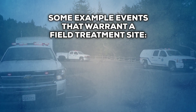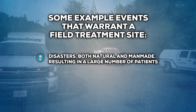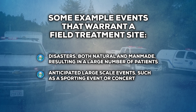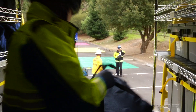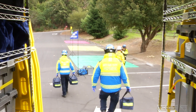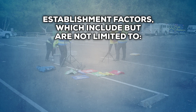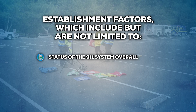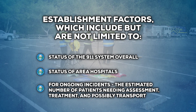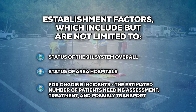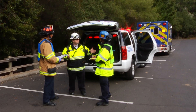Some example events that warrant a field treatment site are: disasters, both natural and man-made, resulting in a large number of patients; anticipated large-scale events such as sporting events or concerts; and evacuation of a skilled nursing or other medical facility. Incident commanders and the EMS duty chief collaborate to determine when and where a field treatment site should be established, based on factors including status of the 911 system overall, status of area hospitals, and for ongoing incidents, the estimated number of patients needing assessment, treatment, and possibly transport. Once deployed, the field treatment site will help reduce patient volume at local hospitals while still ensuring that patients receive the treatment they need.